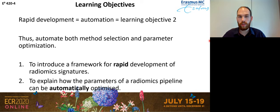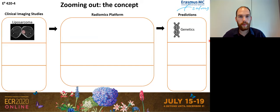That's basically where our second learning goal comes in. In order to do something rapidly, a good choice is often to automate the process. So what we're going to do is automate both the method selection — which methods to use — and also the parameter optimization. We want to automatically optimize everything, and that combines our two learning goals.